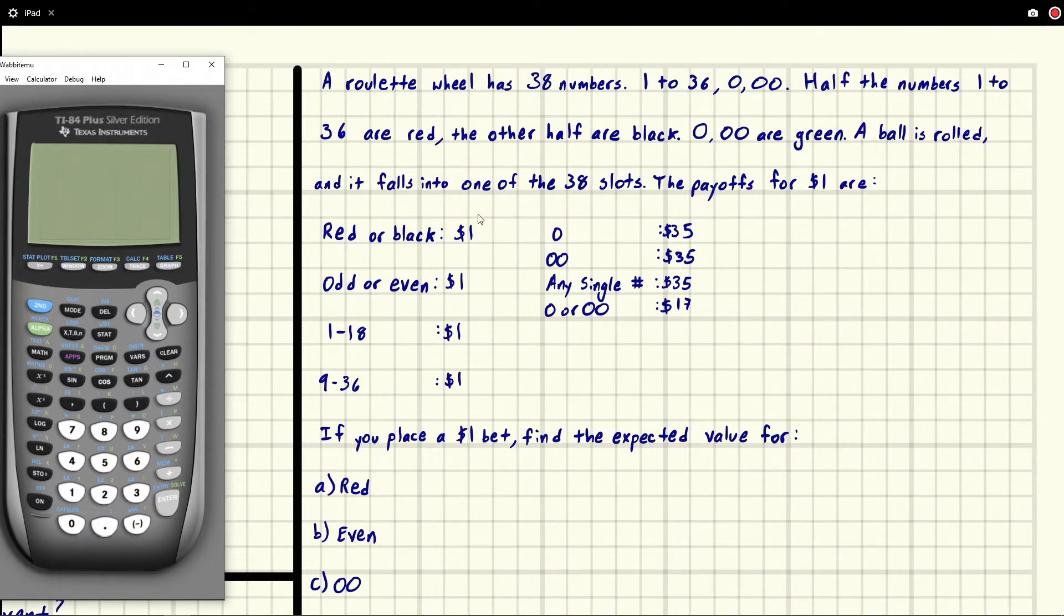The payoffs for $1 are - basically when you bet a dollar, if you get red or black you win another dollar, or if you bet odd or even and it lands on one of those numbers, you win a dollar. If you're not familiar with a roulette wheel, it's like a big circular table with numbers and colors on it, and you have this ball that rolls around. If it lands on the thing that you bet on, then you win the payoff.